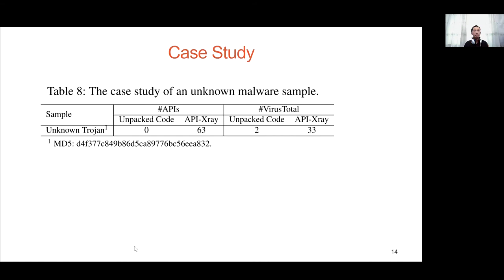We take an unknown malware as a case study. This malware is packaged by an unknown packer with two API obfuscation schemes: IAT redirection and anti-debugging routine. The results show that the original unpacked code has no API information, and the detection number of VirusTotal is only 2. After API X-ray recovers 163 APIs, the detection number rises to 13. This evaluation shows that API X-ray improves the detection rate of unknown malware.